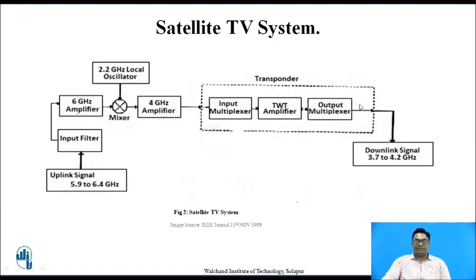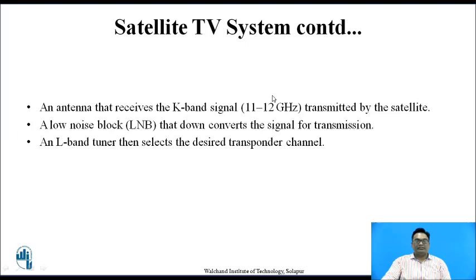The transponder is a part of the satellite, while the uplink processing blocks form part of the Earth station or transmitting station. The system uses the K-band signal, which is of 11 to 12 GHz, for the transmission of signals. A low noise block is used which down-converts the signal for transmission. An L-band tuner is used for selecting the desired transponder channel.